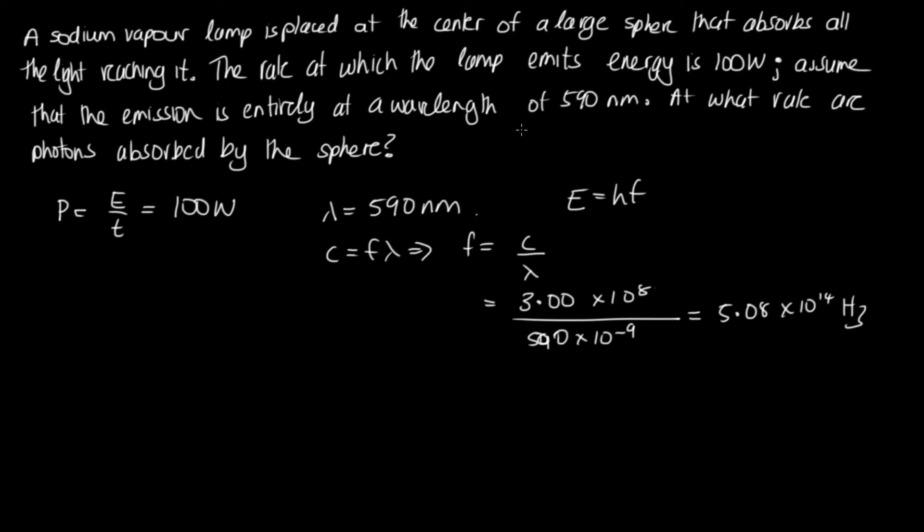Okay, so now we have the frequency of the photons. So we can work out the energy carried by one photon using HF. So this is 6.626 times 10 to the minus 34, and then the frequency was 5.08 times 10 to the 14. So solving this one, we get 3.37 times 10 to the minus 19 joules, and that's on one photon, so joules per photon.